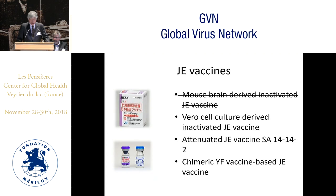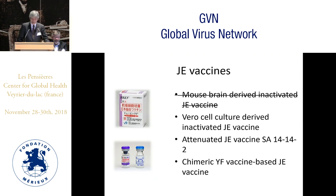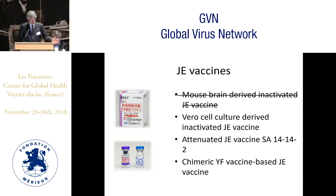JE vaccines currently used include inactivated vaccine made from cell culture systems, and also the attenuated JE vaccine SA14-14-2, which is used very widely in Asia. Additionally, a chimeric yellow fever vaccine-based JE vaccine is also used.